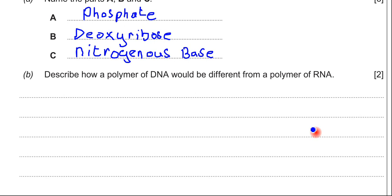You could talk about the sugar: in DNA it's deoxyribose, but in RNA it is ribose sugar. There's also a difference in the nitrogenous base — in DNA you have the thymine base, but in RNA that's changed to uracil. DNA is also normally a lot longer than RNA, and DNA is double stranded while the majority of RNA is single stranded.